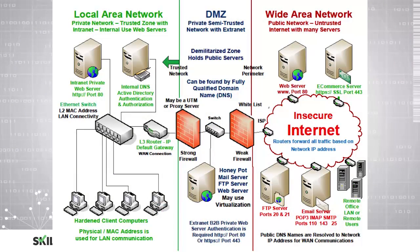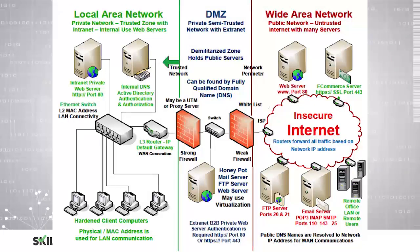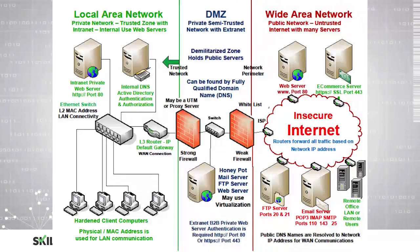Here we have an example network for a corporate environment. On the left we have our local area network — our private network, which is a trusted zone where we have internal use web servers for our intranet, internal DNS servers, active directory servers, and ethernet switches connecting all of these devices. We also have client computers hardened for security, using the physical or MAC address to communicate within this local area network. We then have our DMZ, which is our semi-trusted network with extranet access, separated from the LAN by a strong firewall, which could be a UTM or unified threat management device or a proxy server.